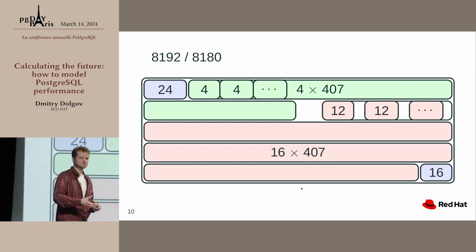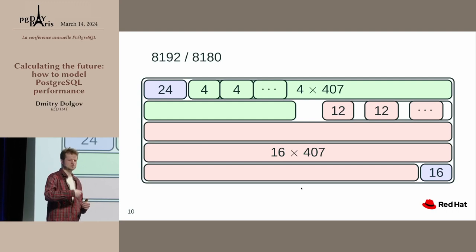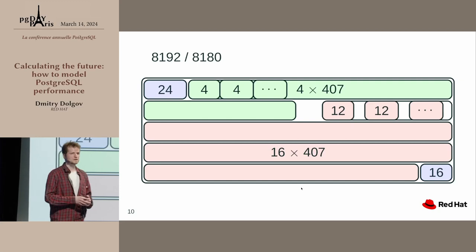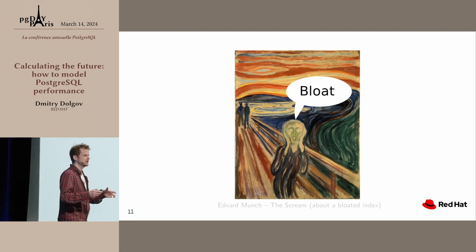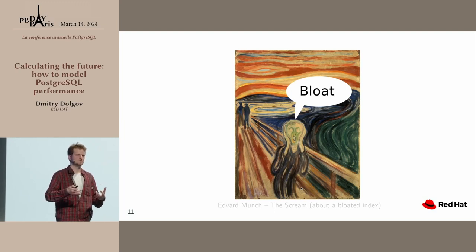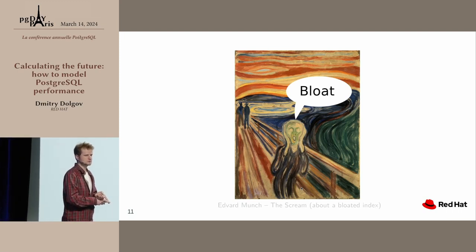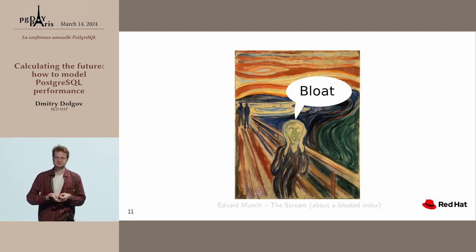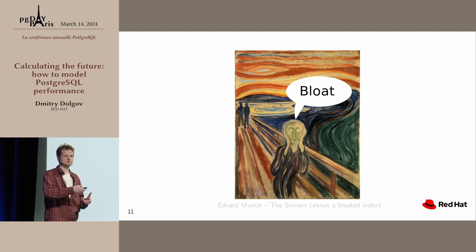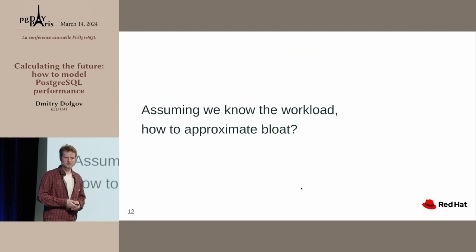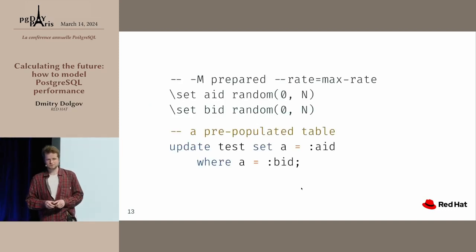Now we understand how much information we can put into our index. But this is only very static information — you'll see this only if you insert sequentially without doing anything else. In real life, it looks quite different. One particular problem is bloat. Bloat is very hard to estimate — it's hard to even wrap your head around how to do a back-of-the-envelope calculation for it. Bloat is usually dead tuples in our indexes, and it happens when you remove or update something, or roll back an insert in a transaction.